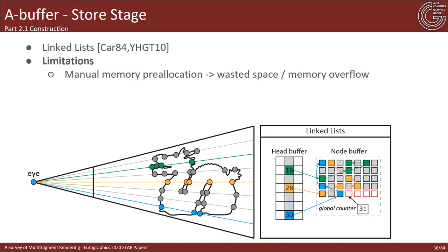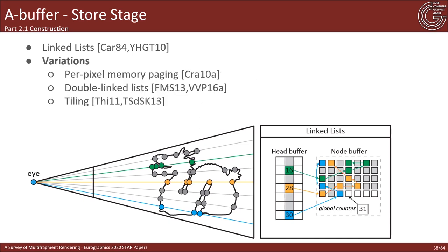Linked lists suffer from two limitations. First, they require a memory pre-allocation step to reserve the memory space needed, since dynamic memory allocation for new nodes is not possible within a shader. This is decided manually and can result in wasted space or memory overflow, which usually manifests as flickering. Second, the non-contiguous allocation patterns of linked lists can result in memory indirections and cache misses, causing performance degradation.